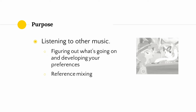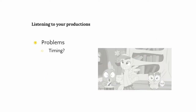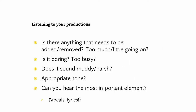Let's go a little bit more in depth. We need to listen to our own productions for things like problems with timing, intonation, unwanted artifacts, noises, and mistakes — such as those introduced by sloppy cutting and mixing. Of course, when listening to your own music, you're not just listening for tiny minuscule mistakes. You also need to be worried about high-level stuff: Is there anything that needs to be added or removed? Is there too much or too little going on? Is your song too boring or too busy? Does it sound too muddy or harsh? Does it line up with the story you're trying to convey? Can you make out the most important element — in many songs, that's the vocals?